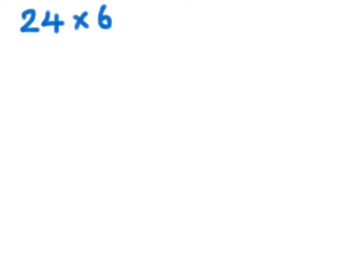One method you can use when multiplying numbers together is partitioning. For example, here we have 24 times 6.